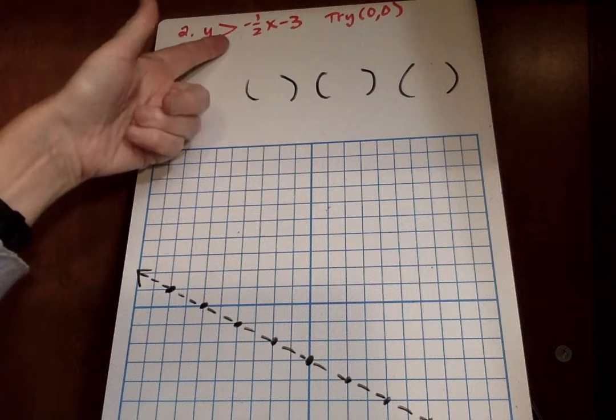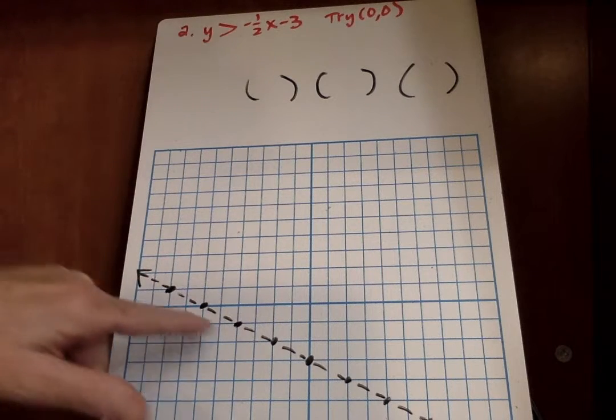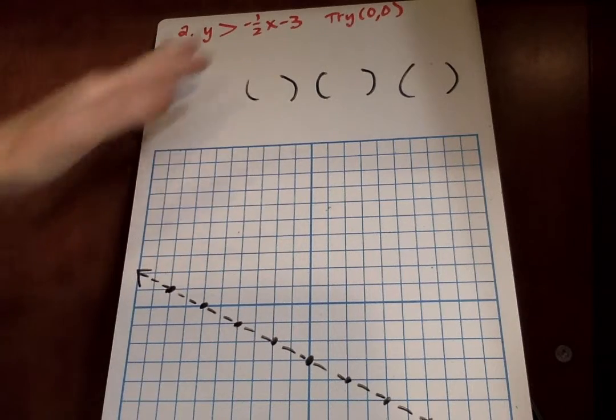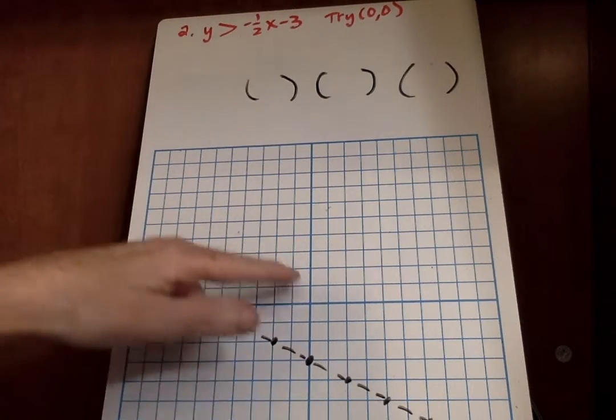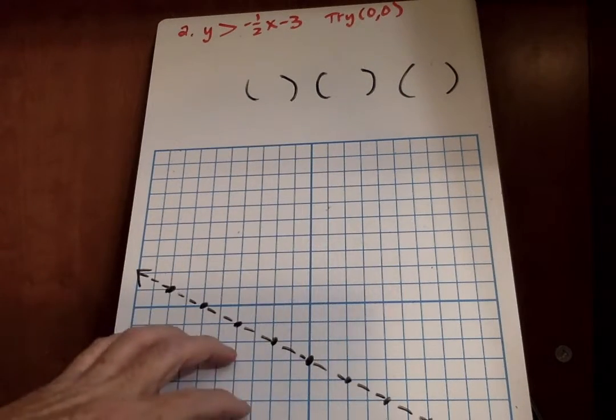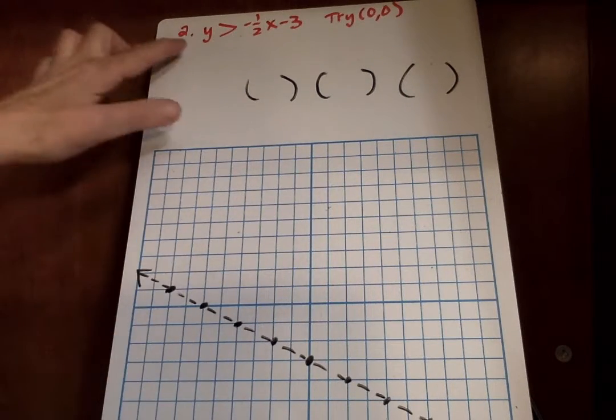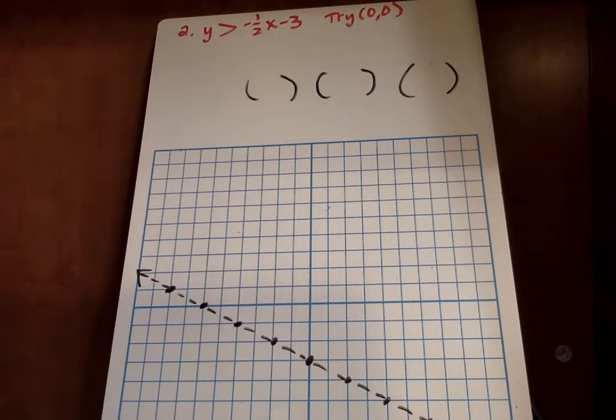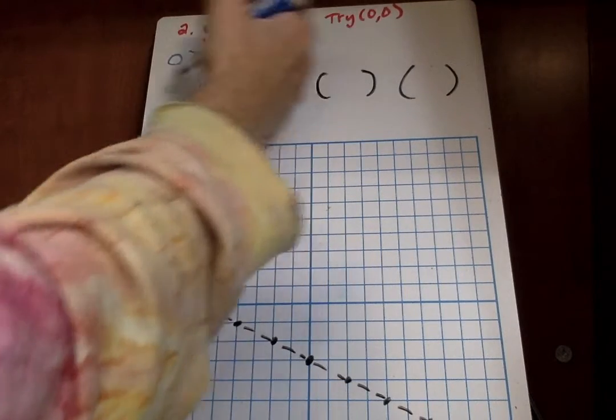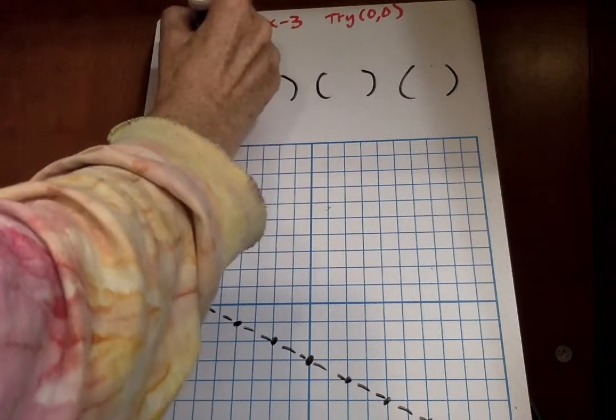This is greater than. So less ink here, less ink here. And they already have it dotted line for you and that's fabulous. Now I'm going to try 0, 0 to see if I shade above the line or if it makes an untrue statement if I need to shade over here. So we have y is greater than all of this. So I'm going to put 0 in for y is 0 greater than 0 times negative 1 half is 0 minus 3.